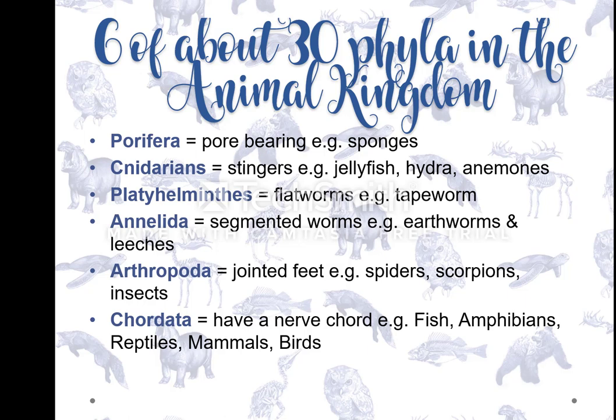Cnidarians are all the stingers — your highlighted organism should be jellyfish. The third phylum is Platyhelminthes — they are flatworms. 'Plat' in Afrikaans means flat. Think of a squashed worm: if you took a round worm and flattened it, it would end up with a larger surface area but thinner — like a tapeworm, for example.